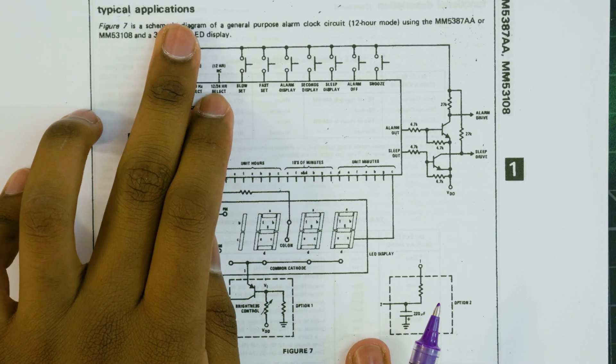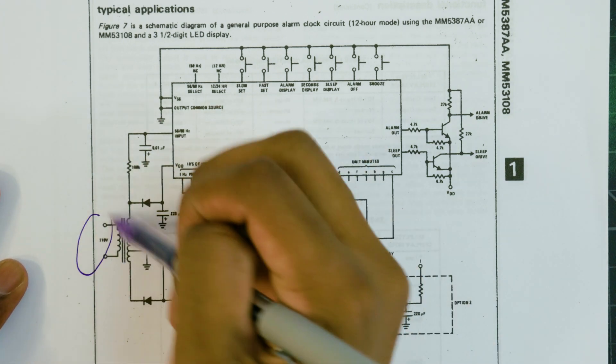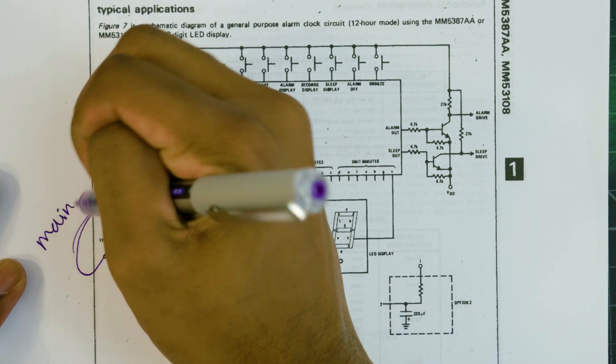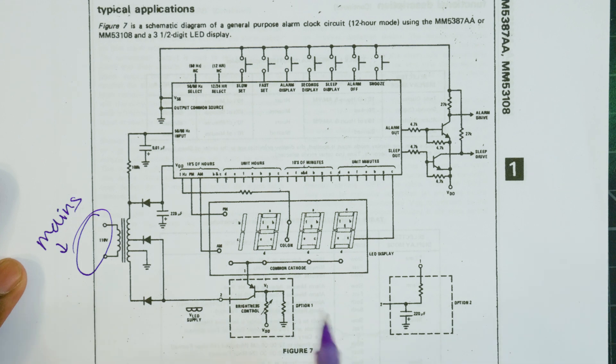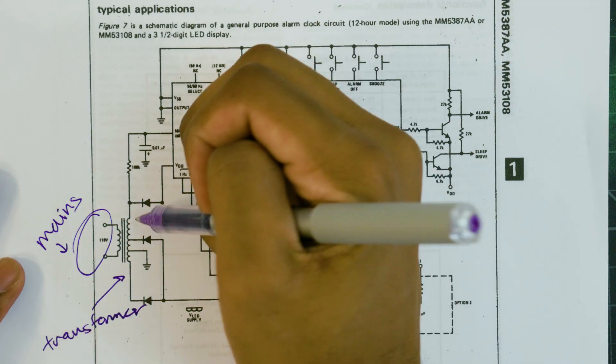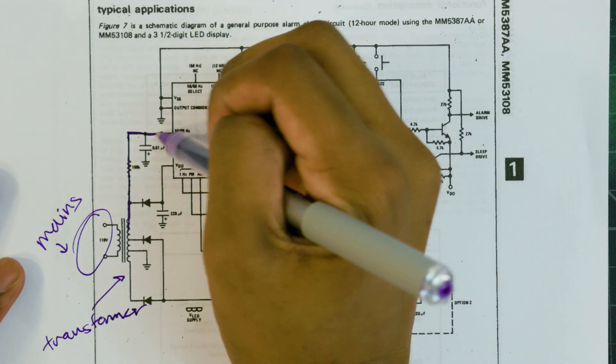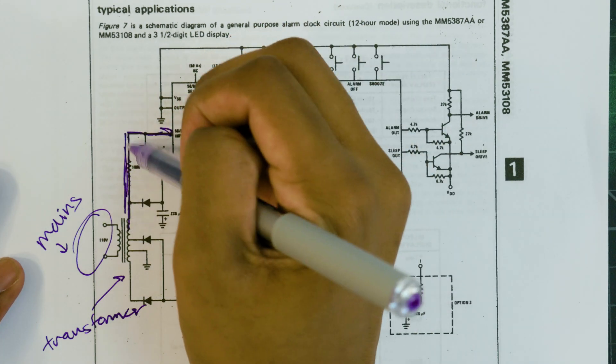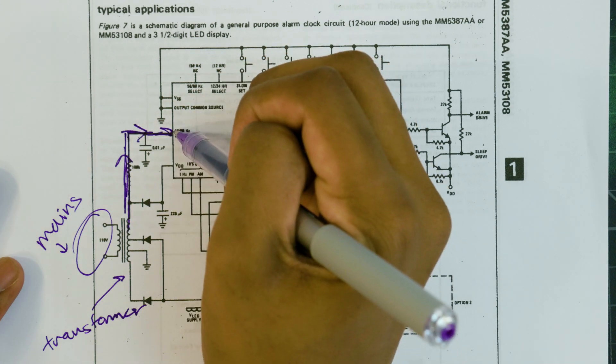And in fact, if we go into the datasheet, we can see that that's exactly what the manufacturers of the chip recommend. Right here, they have power coming from the wall, going through a transformer, and then connecting to the input signal of the IC. So in the end, all this means is that the clock from this IC is getting both its power and its timekeeping ability from the wall.